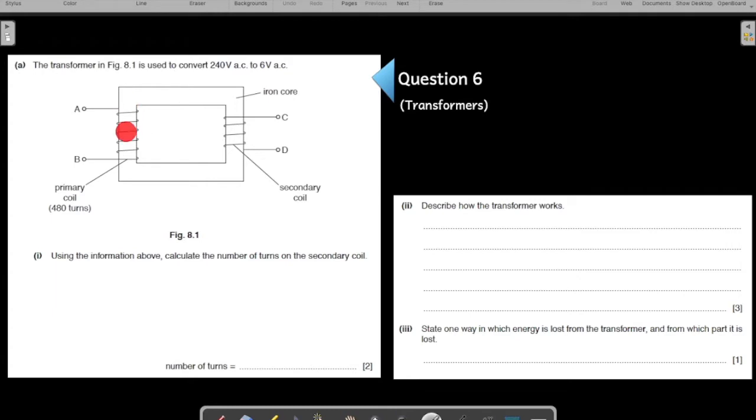The transformer in this figure is used to convert 240 volts to 6 volts AC. So let us write down the information: how much is the voltage in the primary? The voltage in the primary is 240 volts and in the secondary it is 6 volts.